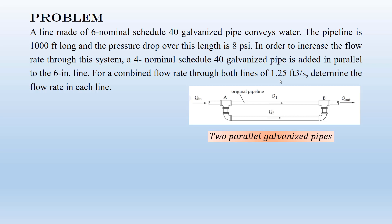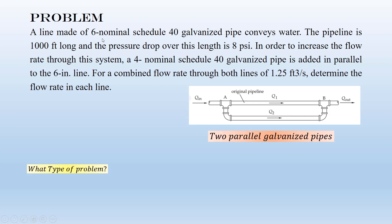Based on the available information, this is a type two problem. Why? Because the diameters are known — you have the nominal diameters so we can find the exact diameters. We also have the lengths and the pressure drop. However, the volumetric flow rate in each individual pipe and the velocity are unknown. So this is type two. To solve pipe system problems, we first need to collect parameters: thermophysical properties (density and viscosity), diameters from the table, and roughness epsilon for relative roughness.